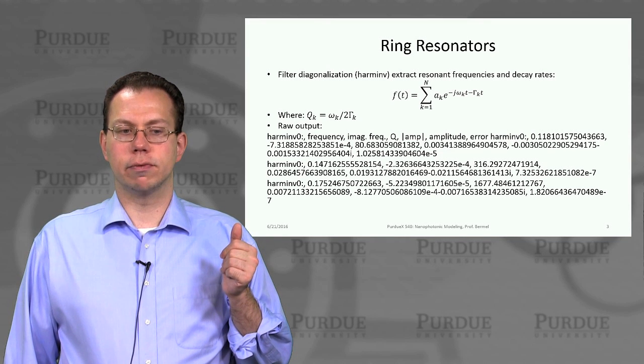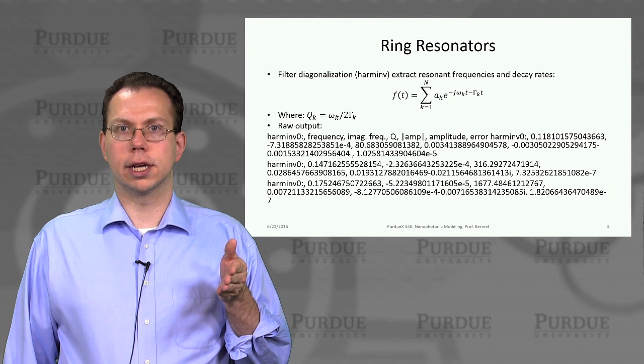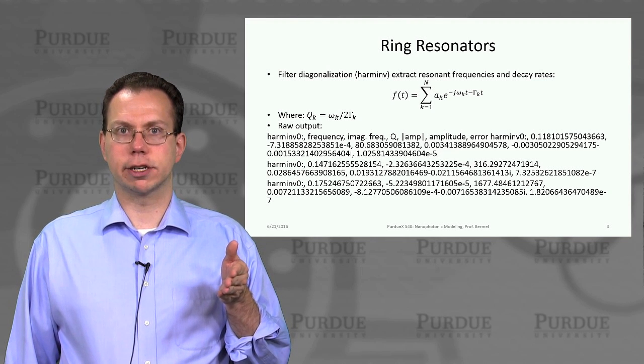And so you can define the ratio, omega k to twice the decay rate gamma k, as being the quality factor.